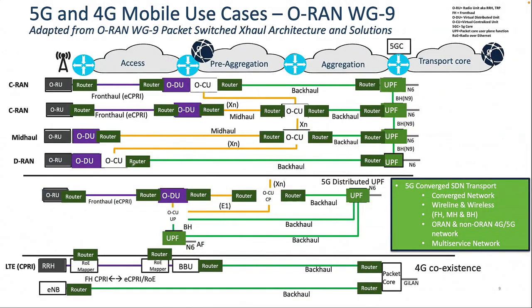This more detailed picture shows all the architecture types we talked about. If you read the work group 9 document — Simon Sprague from my team is one of the authors — it's the first time they have defined this. What we are showing here is CRAN — centralized RAN — so you have the ORU, then a router, then the ODU sitting on COTS hardware as the radio controller, and OCU sitting at a central site. You need dark fiber, and the protocol used is eCPRI. This is CRAN.